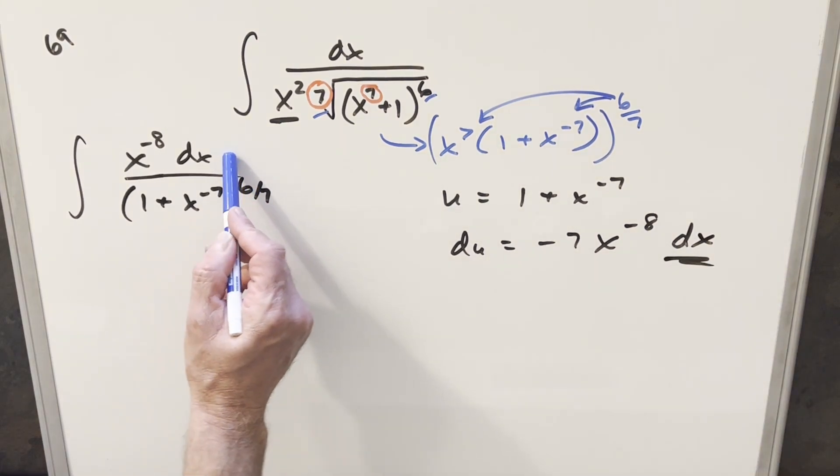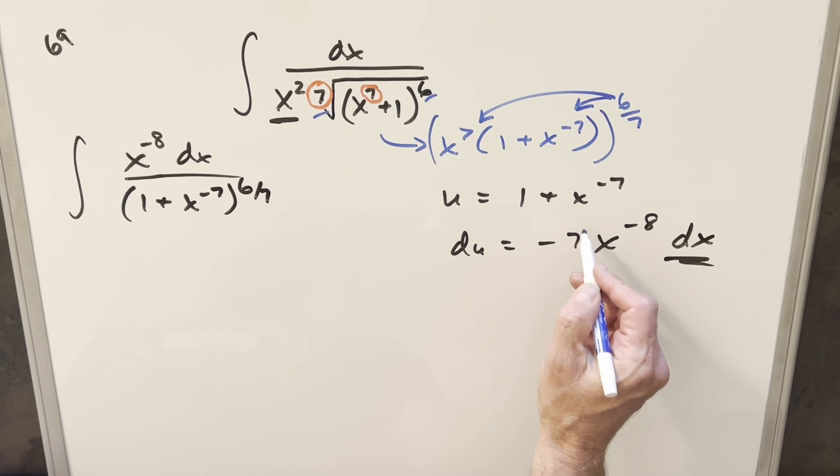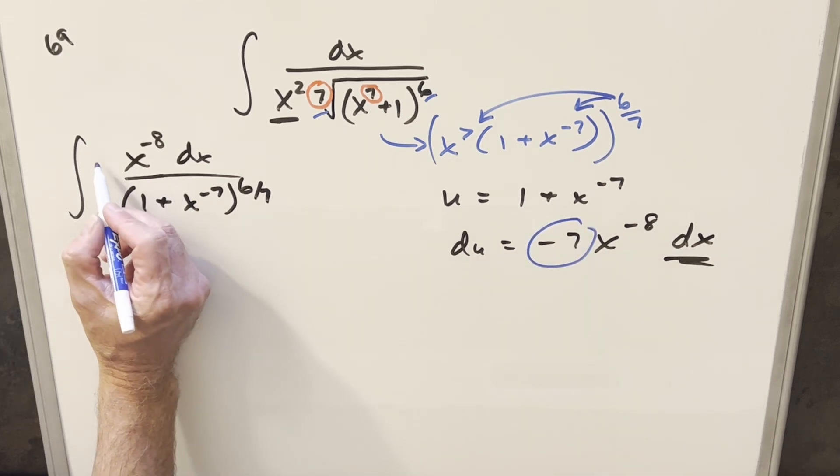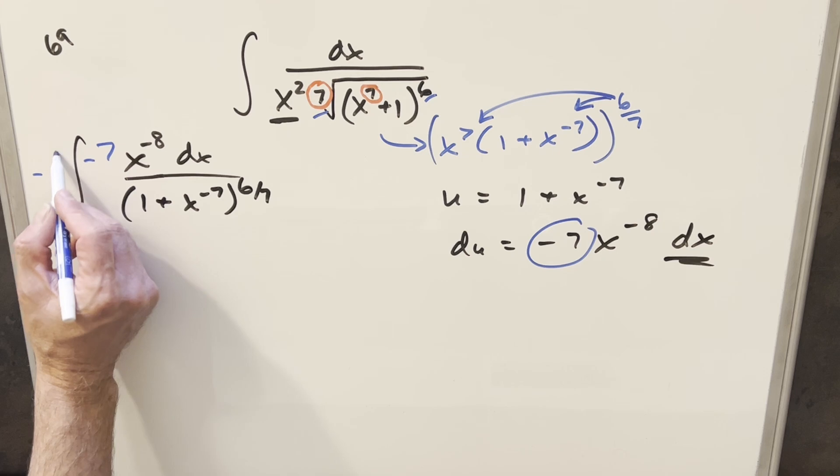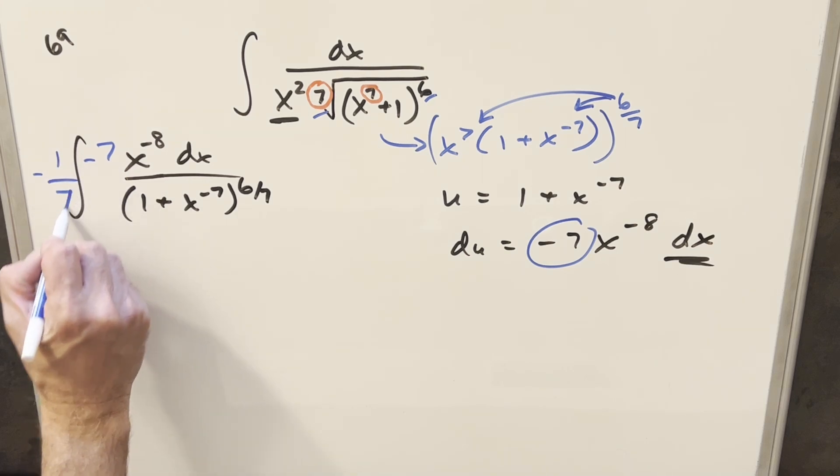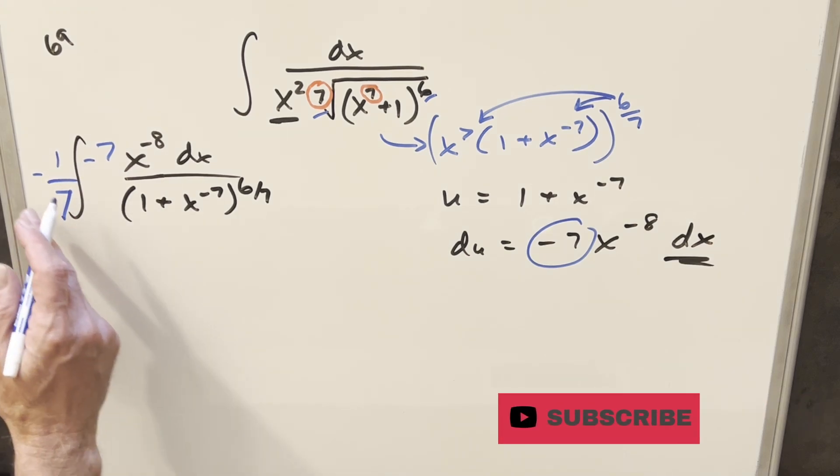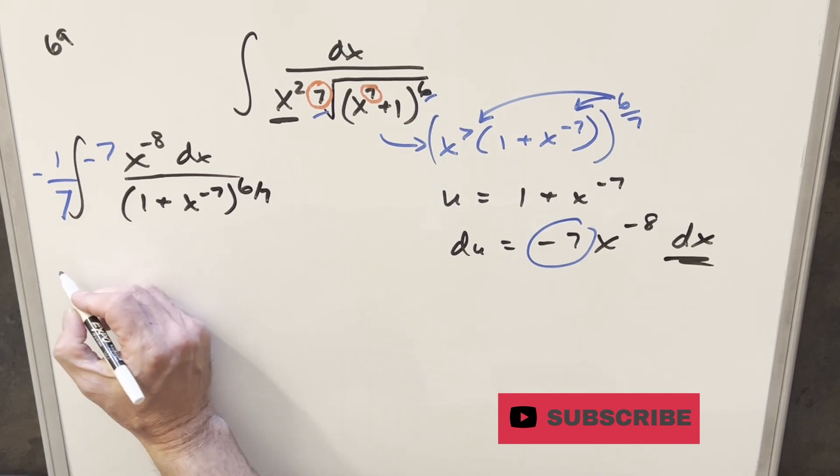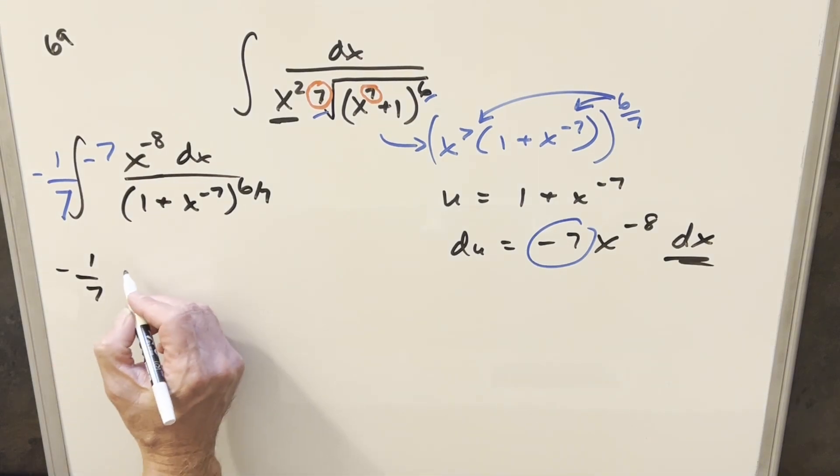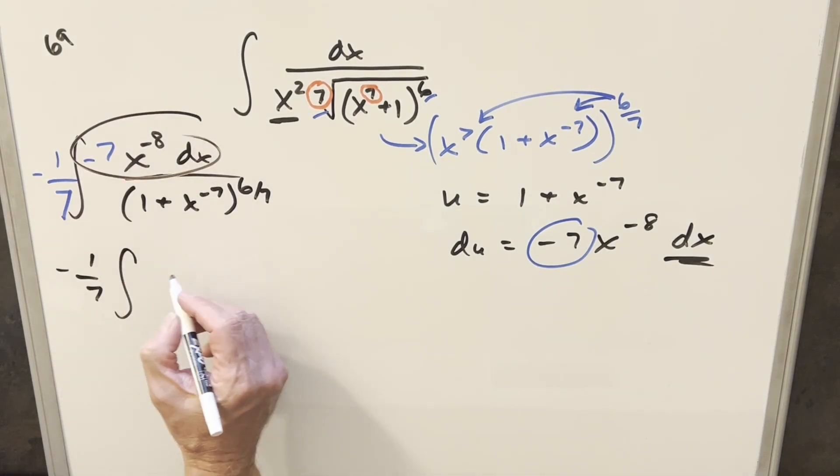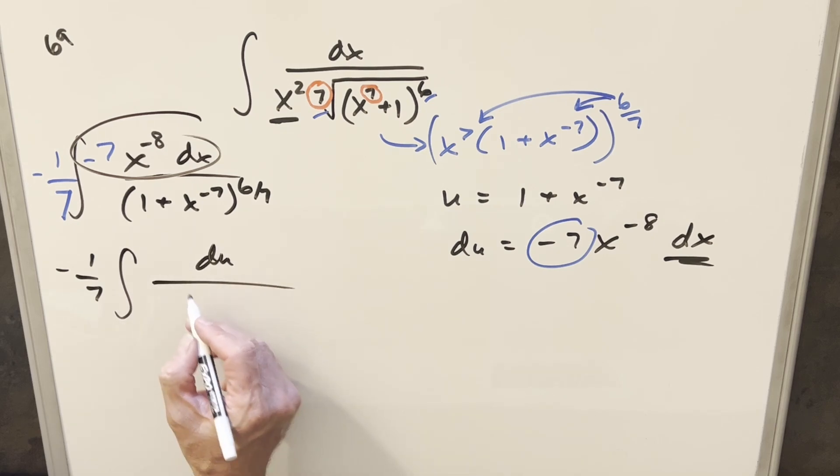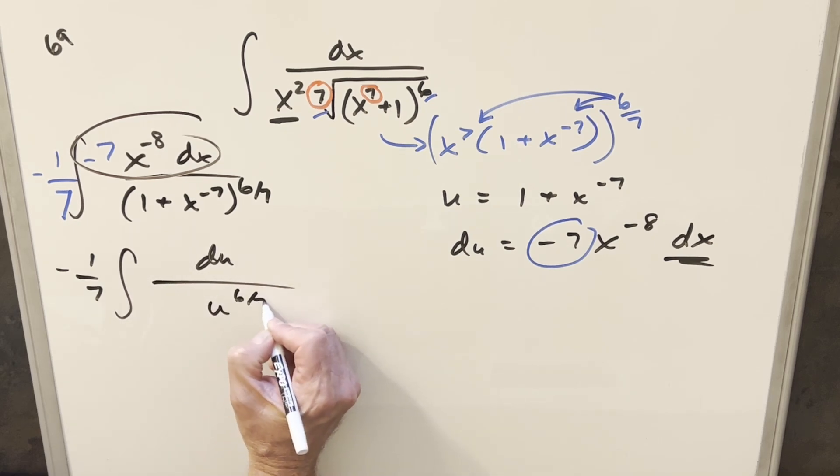So then we almost have everything we need in the numerator, we're just missing this minus 7 right here to make it identical to this. So let's just multiply in minus 7, but I don't want to change it so I multiply it in front by minus 1 over 7. That way we're just multiplying it by 1. And then let's just go ahead and substitute, we have minus 1 over 7, everything here becomes just du, and then we have just u to the 6 over 7.